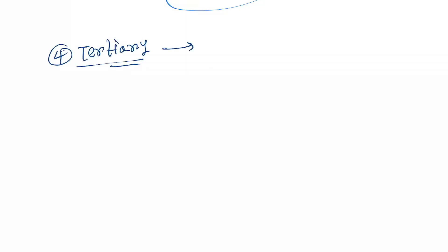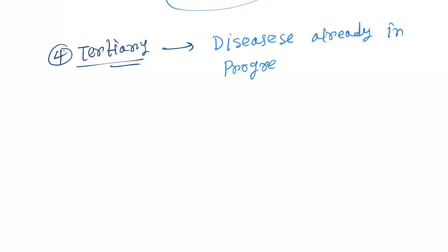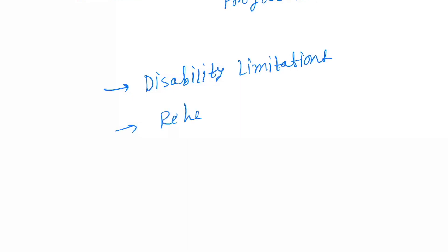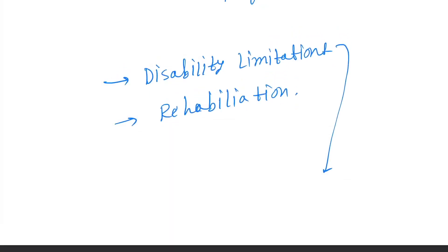Number four is tertiary prevention. Here the disease is in progression. Now here we can do disability limitation and rehabilitation.